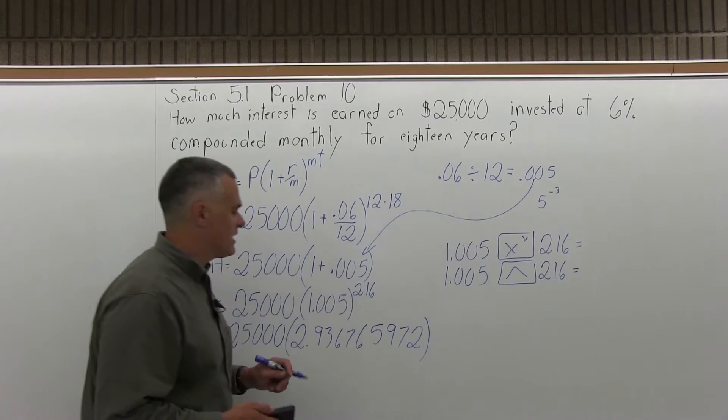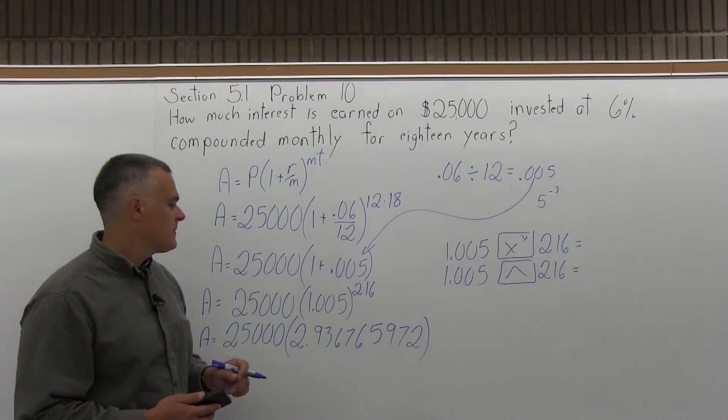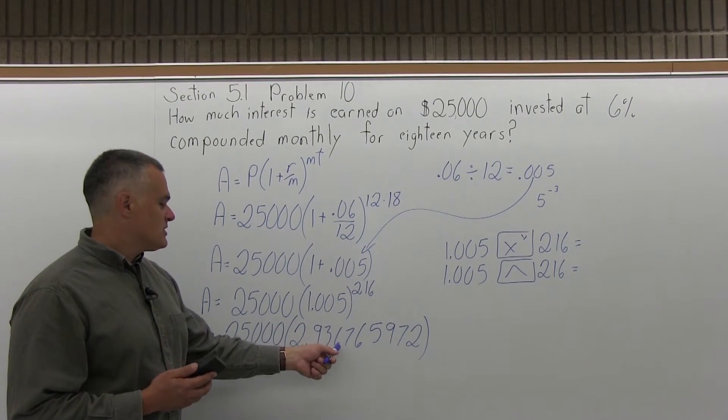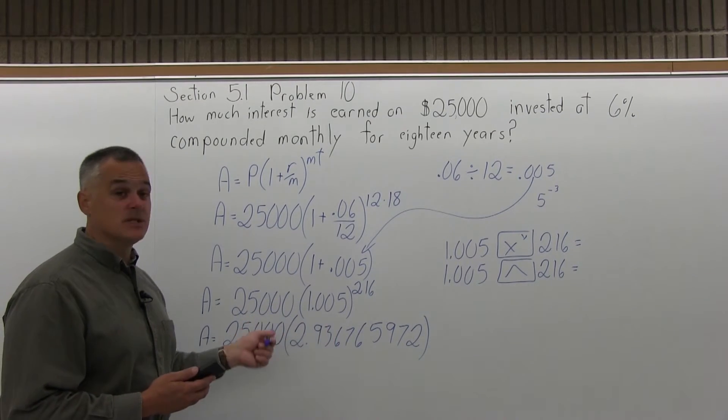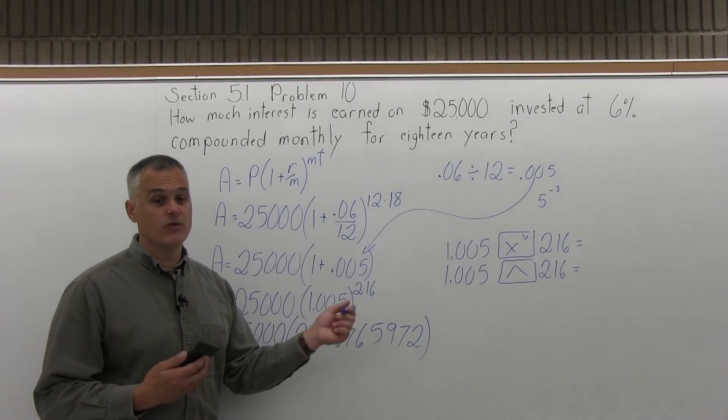And now my formula is A equals 25,000 times the result of that exponent of 216th power is 2.936765972. I'm just going to leave that on the screen of the calculator with all the decimals in it, and I'm going to multiply the result on the screen times the 25,000 that I had written in front of the parentheses.